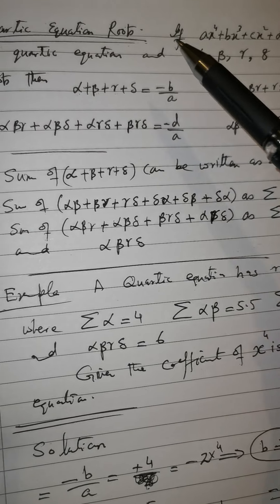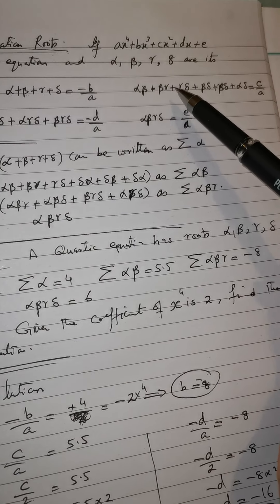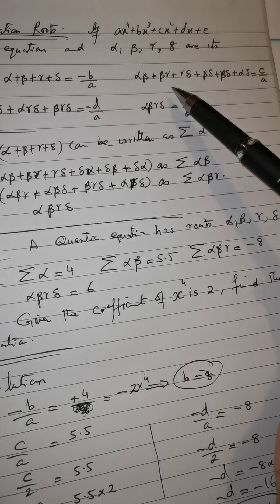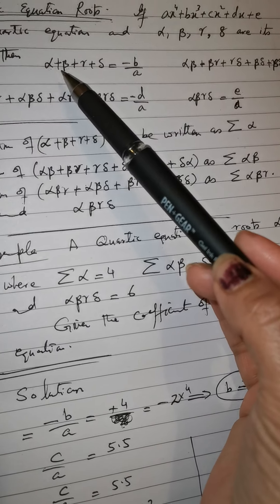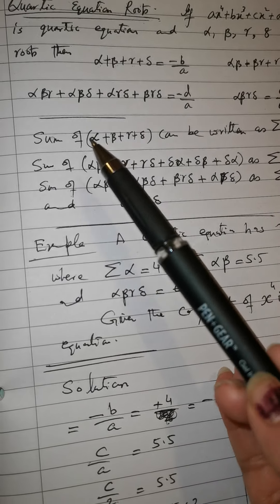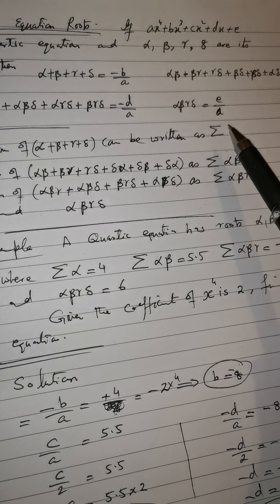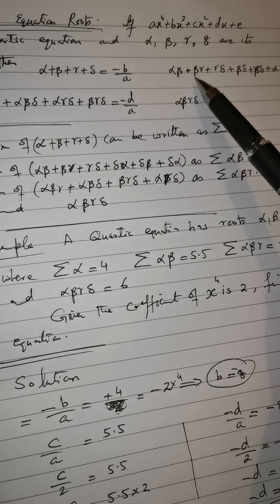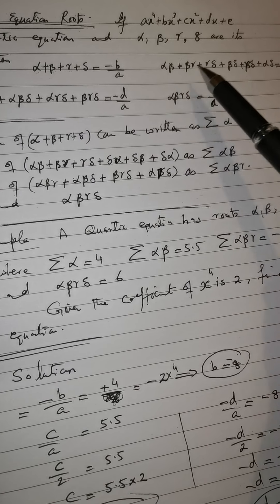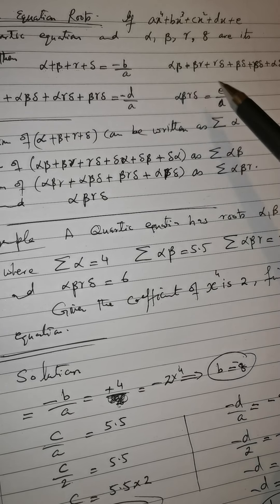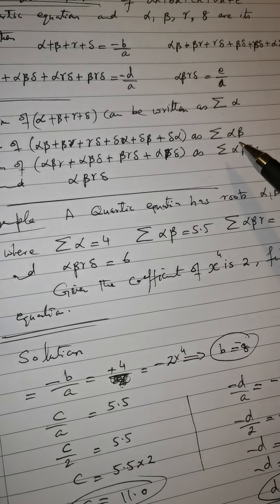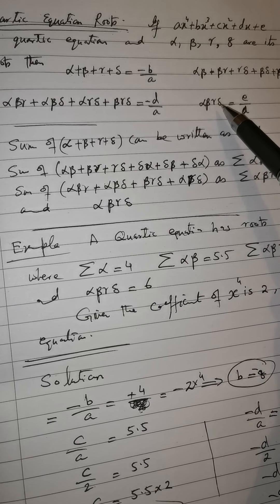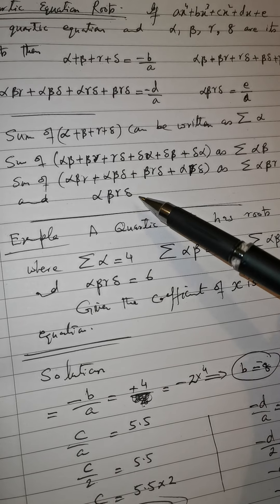These expressions are a little lengthy to write out in full, so for convenience we use summation notation. The sum of roots is written as Σα, the sum of pair products as Σαβ, the sum of triple products as Σαβγ, and the product of all four roots as αβγδ.